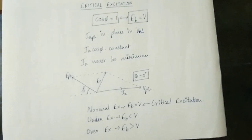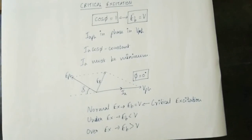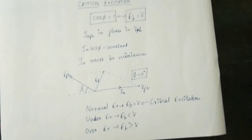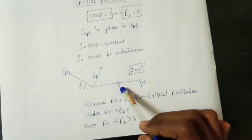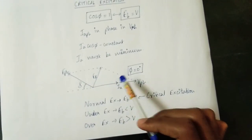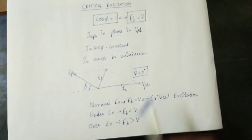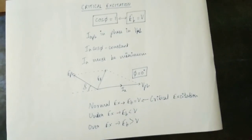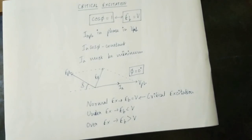The power factor is equal to EB and VP. In this case, the amount of current is low. The IA is low, so that is the critical excitation. The excitation in which the power factor of the load is adjusted to unity is called critical excitation.